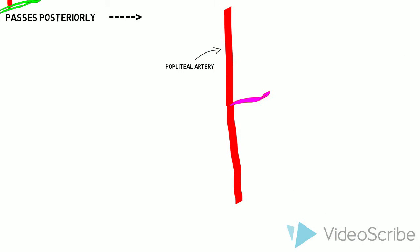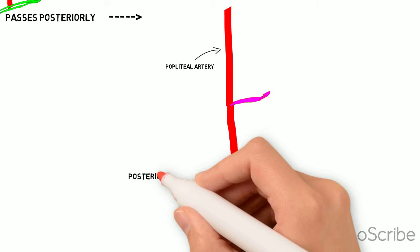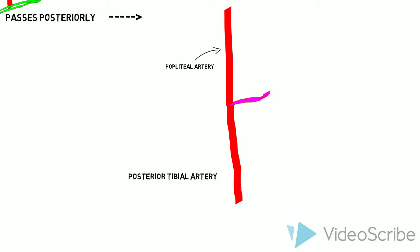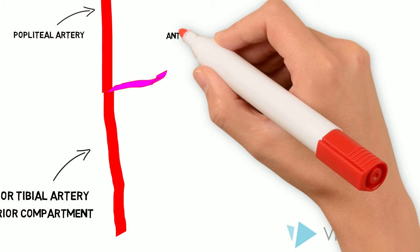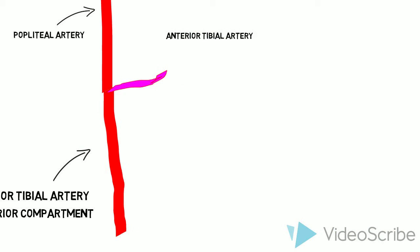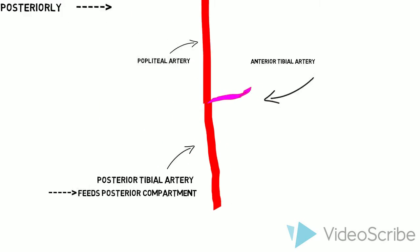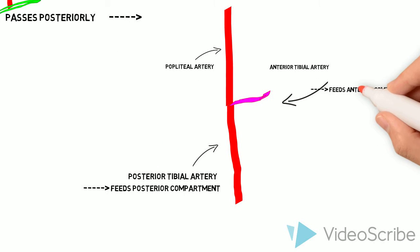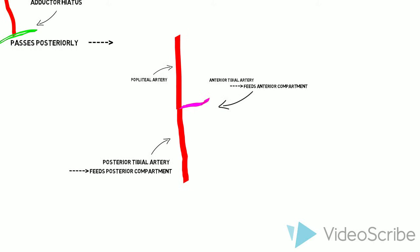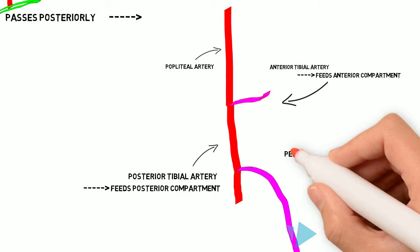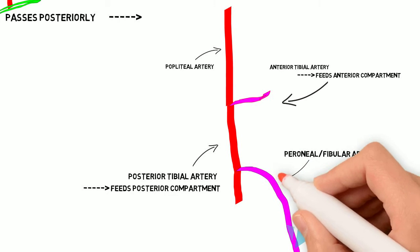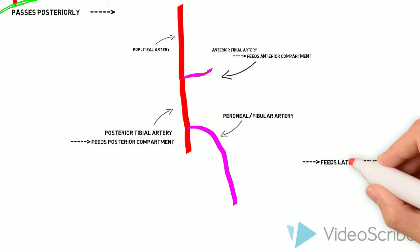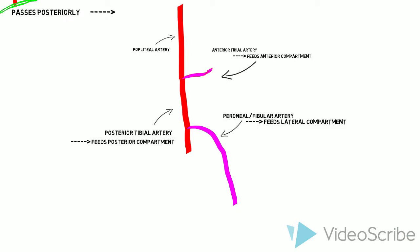The popliteal artery further splits into the posterior tibial artery, which feeds the posterior compartment of the leg, and it splits into the anterior tibial artery, which feeds the anterior compartment of the lower leg. The posterior tibial artery further splits into the peroneal or fibular artery a little further down, and this branch feeds the lateral compartment of the leg.